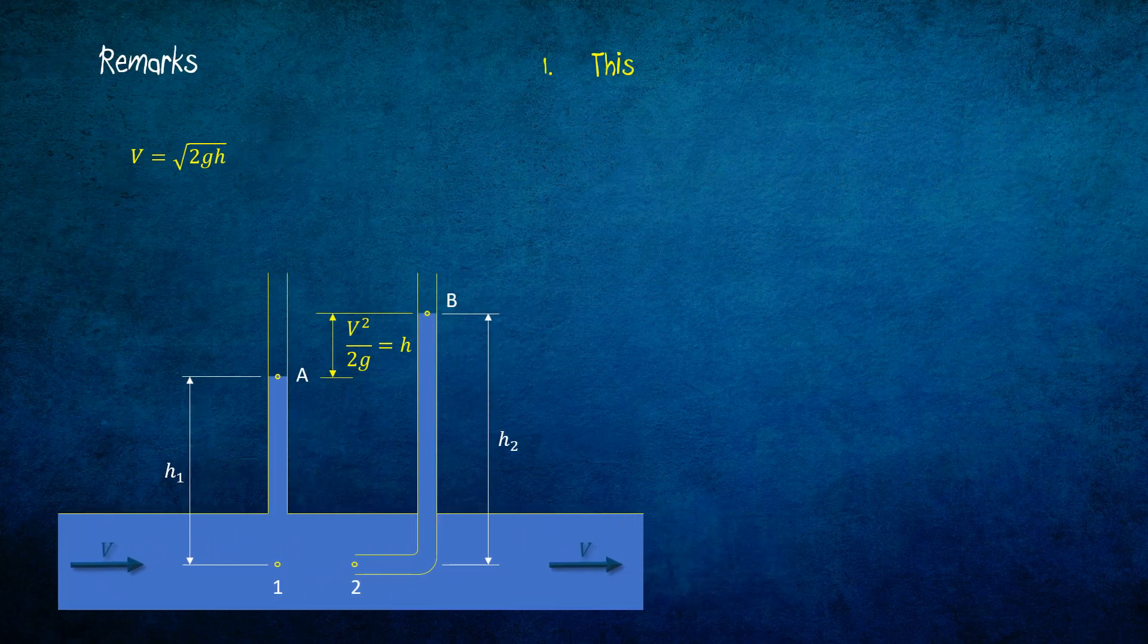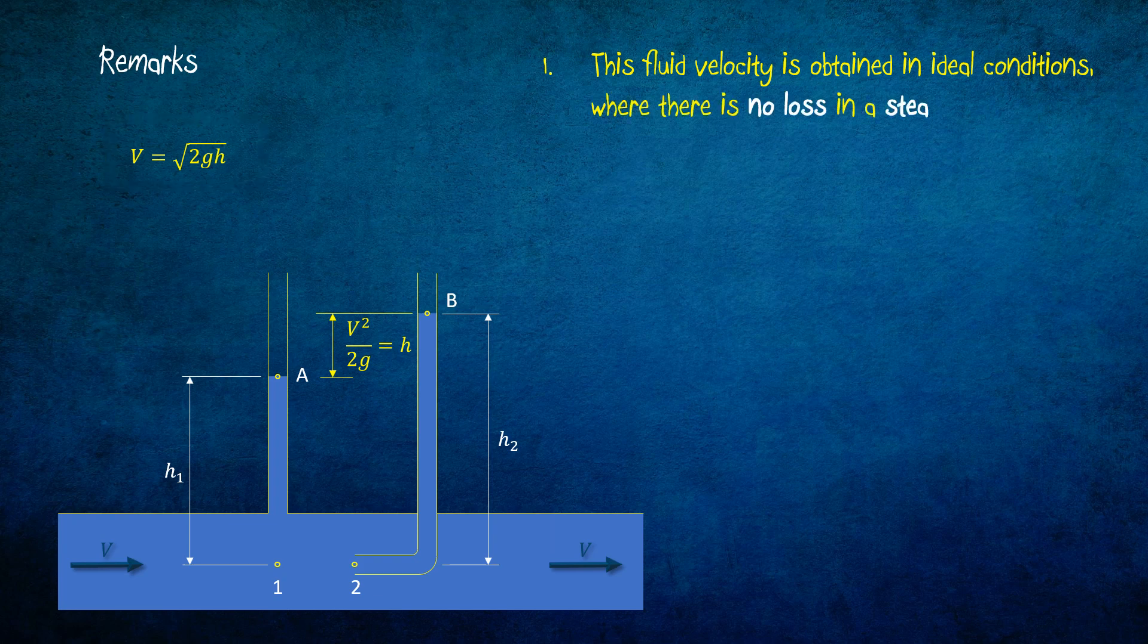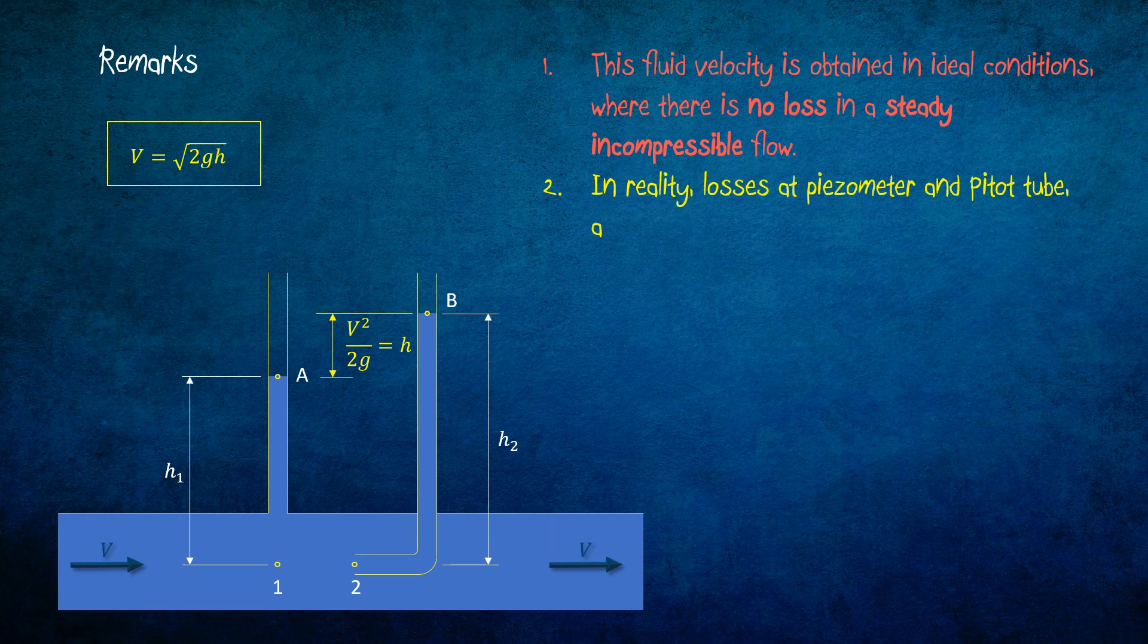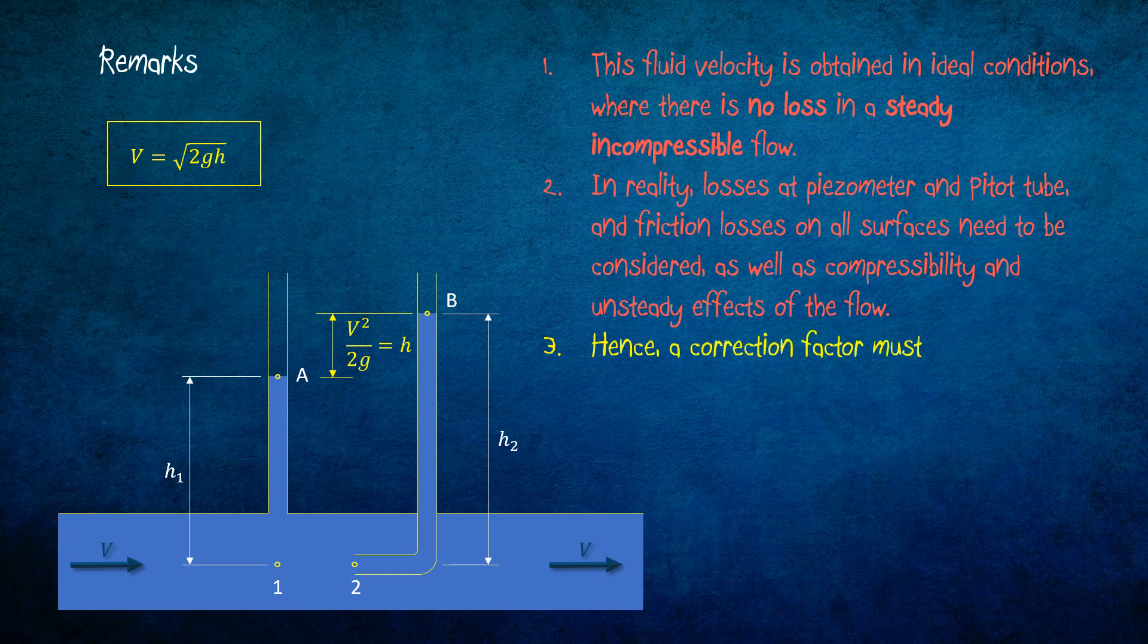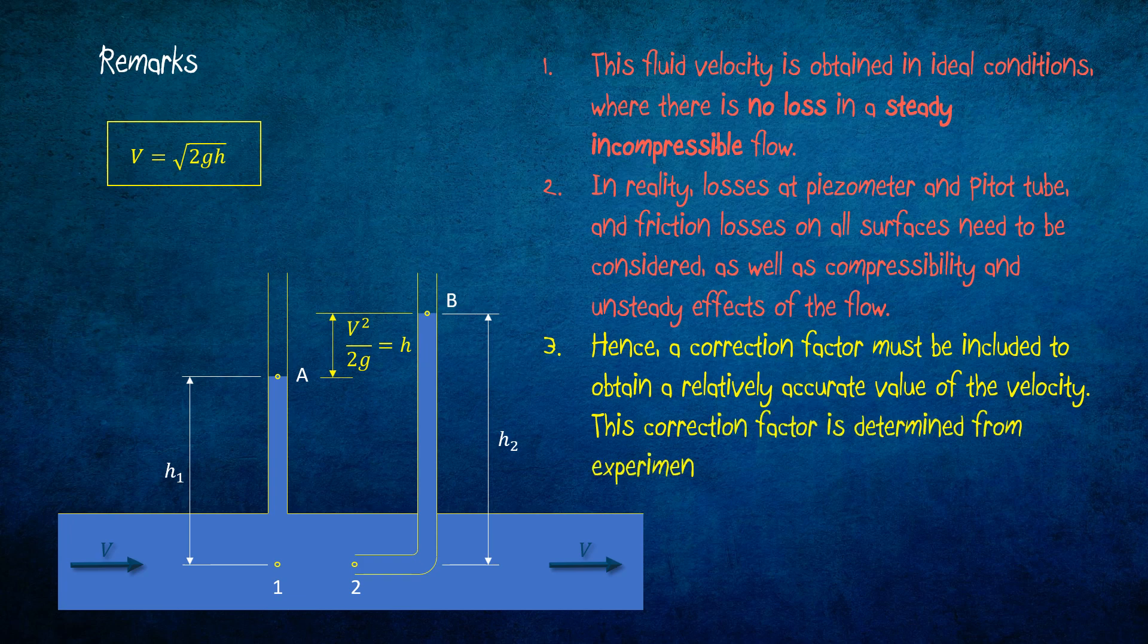This fluid velocity is obtained in ideal conditions where there is no loss in a steady, incompressible flow. In reality, losses at piezometer and pitot tube and friction losses on all surfaces need to be considered as well as compressibility and unsteady effects of the flow. Hence, a correction factor must be included to obtain a relatively accurate value of the velocity. This correction factor is determined from experiments.